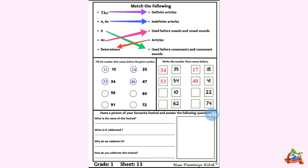If your festival is Holi, write Holi — when is it celebrated, why, and how do we celebrate it. If your favorite festival is Christmas, write Christmas — when it is celebrated: 25 December, why do we celebrate it, and how do we celebrate it. Mention all these things.